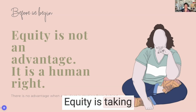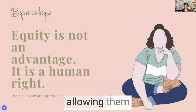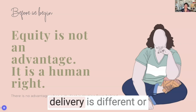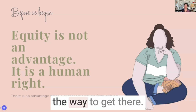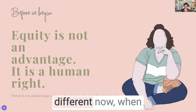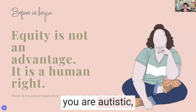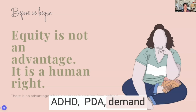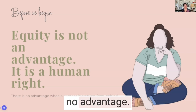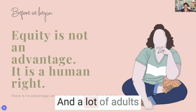Equity is taking individuals and allowing them access to the same outcomes, but the delivery is different — the pathways are different. When you're autistic, ADHD, or demand avoidant, there is no advantage.